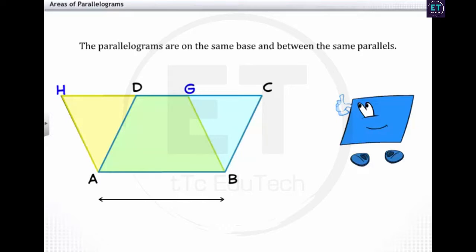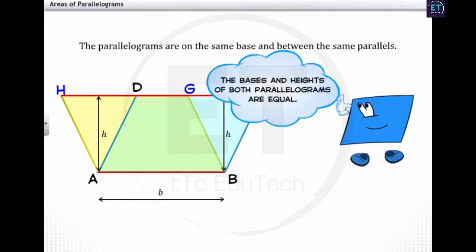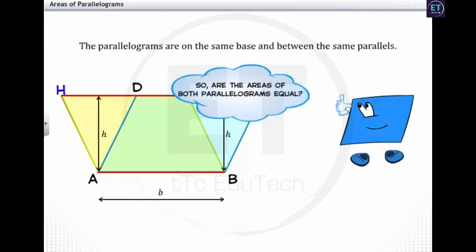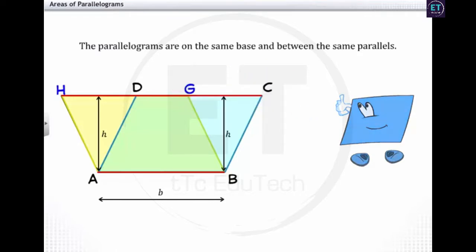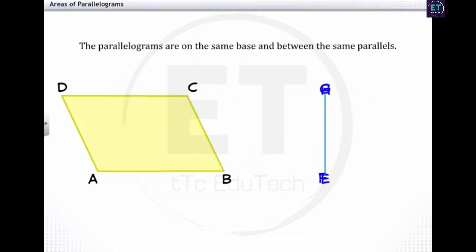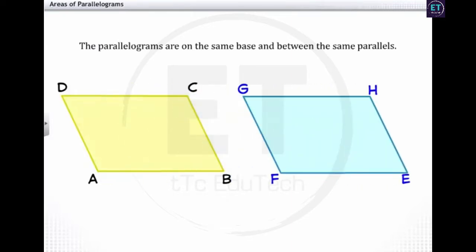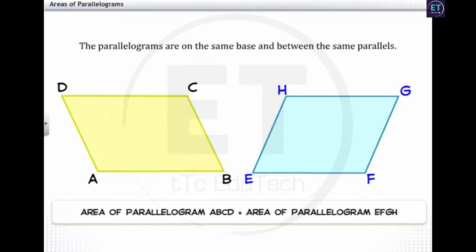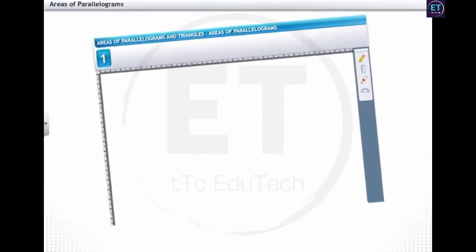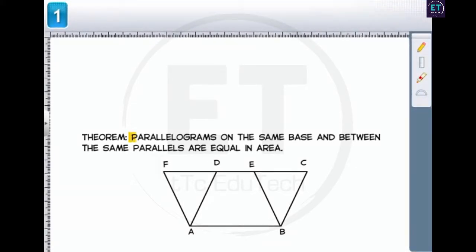You know that the area of a parallelogram is the product of the base and height. In the figure, the base of both parallelograms is AB — we'll name it B. Since both parallelograms lie between the same parallels, the heights of the parallelograms are equal. We'll name the height H. The bases and heights of both parallelograms are equal, so the areas of both parallelograms are equal. Based on this activity we arrive upon a theorem.